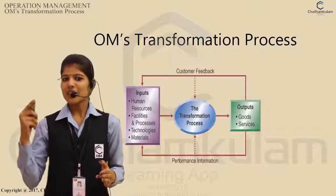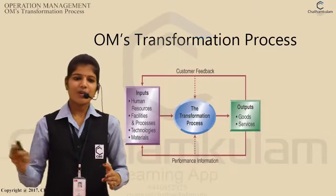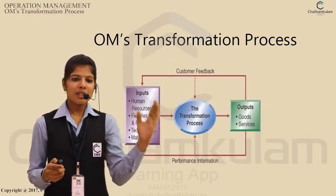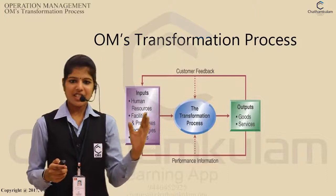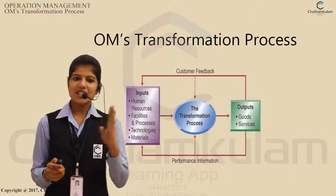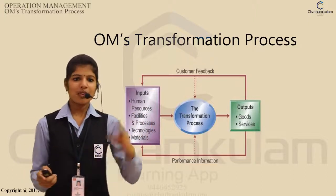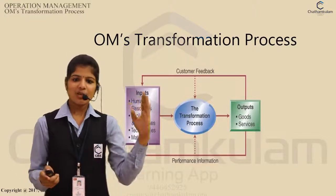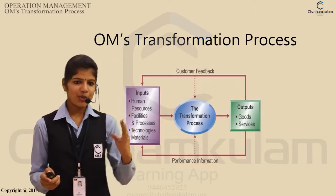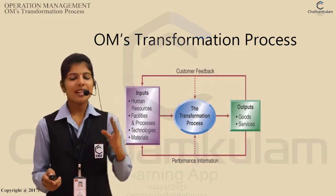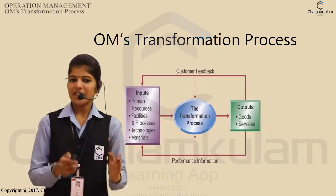Next, the OEM transformation process. The OEM transformation process is concerned with three stages: input, transformation process, and output. Input involves the human resource, facilities and process, technologies and material.